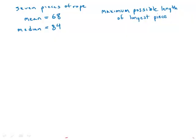Seven pieces of rope have an average length of 68 centimeters and a median length of 84 centimeters. If the length of the longest piece of rope is 14 centimeters more than four times the length of the shortest piece of rope, what is the maximum possible length in centimeters of the longest piece of rope?